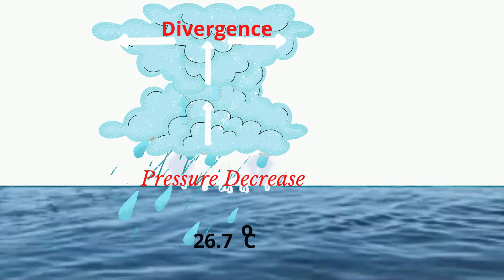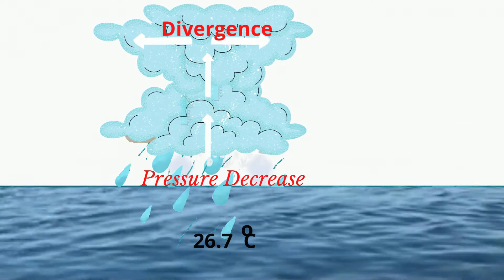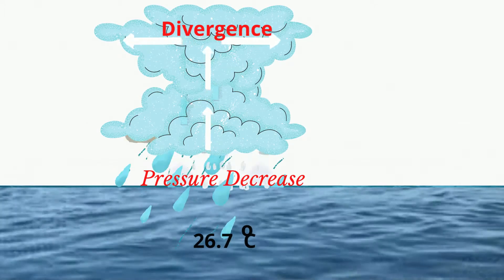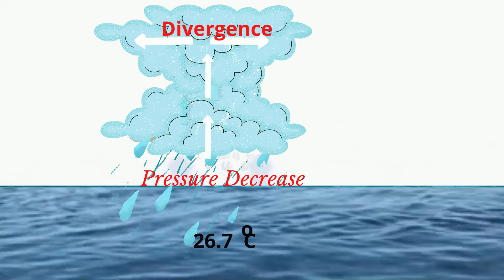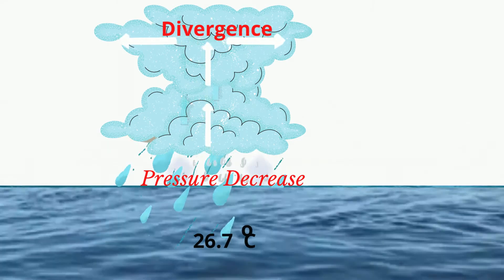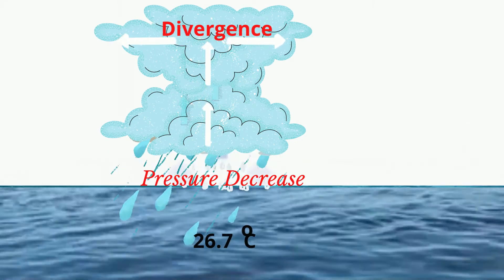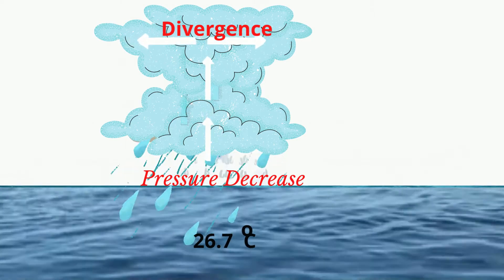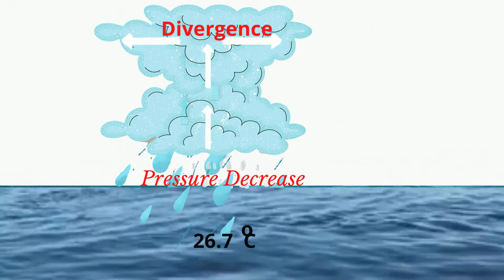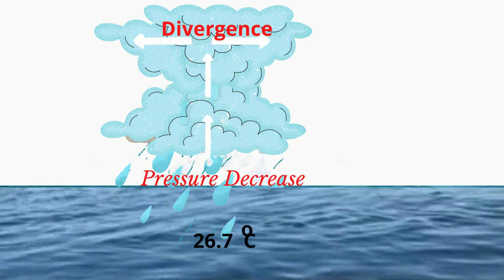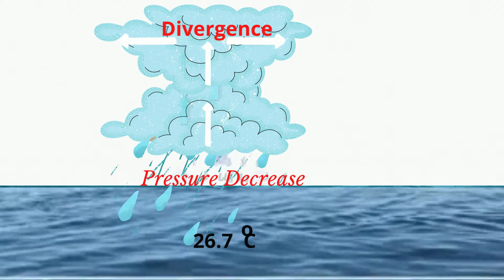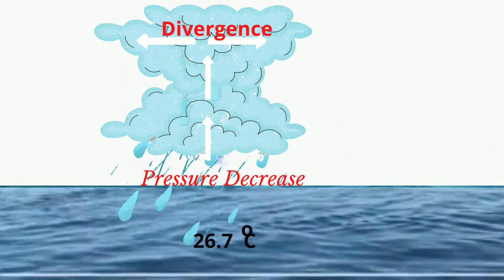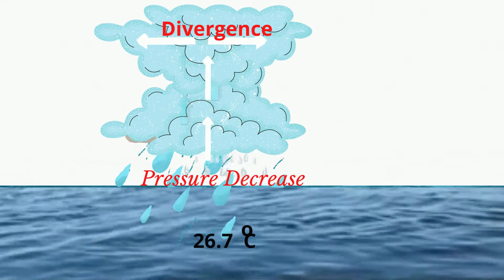The rising air eventually reaches a height where no further rising is possible. At that point, the air will flow out as divergence. This divergence creates a greater pull on the air at the surface, which in turn reduces the pressure at the surface significantly.